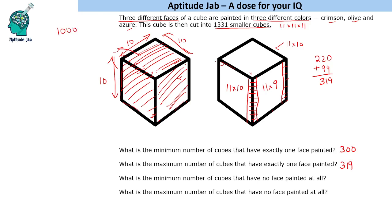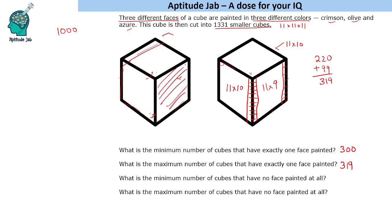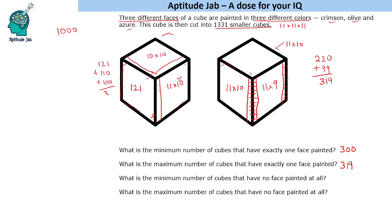We can also count this manually. In one arrangement, the painted cubes are: 121 from one face, plus 110 from the second face (11×10, one column excluded), plus 100 from the third face (10×10, two columns excluded), totalling 331 cubes with paint. So 1331 minus 331 equals 1000 cubes with no face painted. In either arrangement this calculation gives 1000.